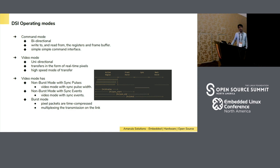In video mode, based on embedded application usage, there are three further modes: non-burst with sync pulse, non-burst with sync event, and burst. These video modes relate to how fast communication happens between host and peripheral — it is a kind of compression. In burst mode, pixels from the frame buffer can be time-compressed, like zip in software.